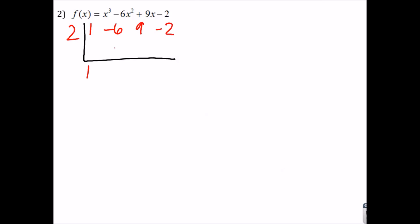Bring down the 1, multiply, add, multiply, add, multiply, and add. Again, we end up with a remainder of zero, which is what we want. So, the quadratic we're left with is x squared minus 4x plus 1. This is not going to be factorable, so we could use either quadratic formula or completing the square.